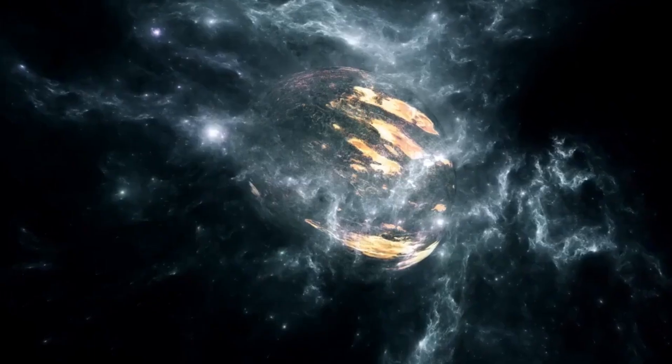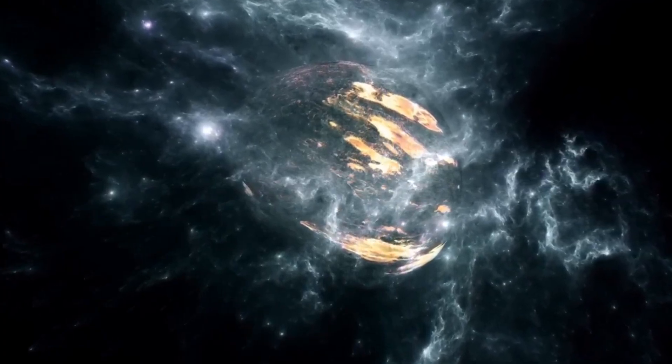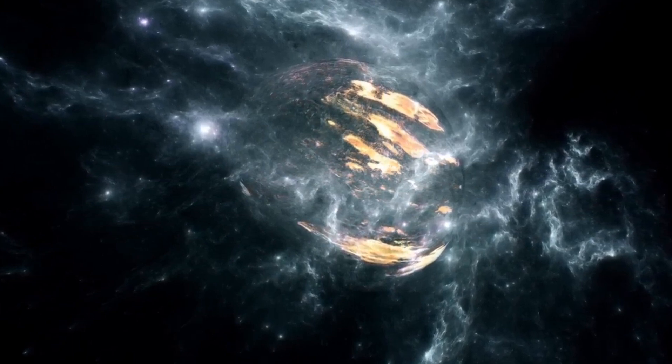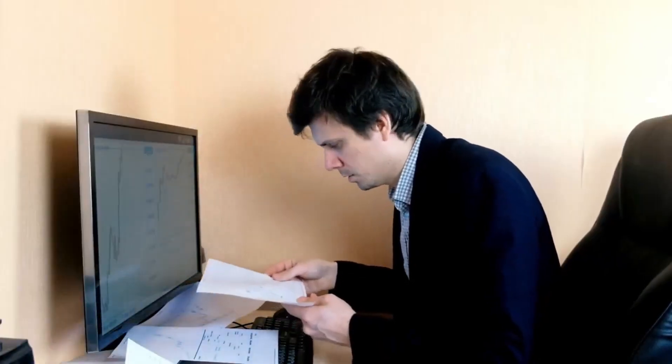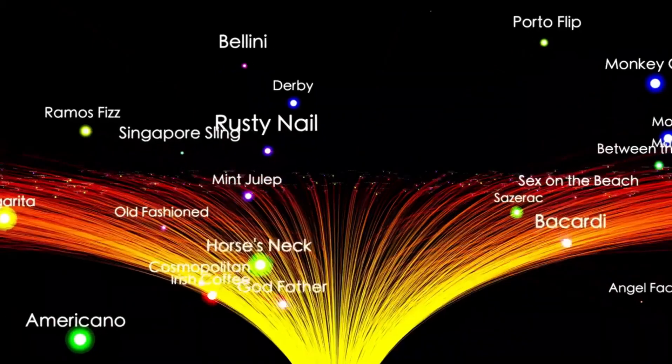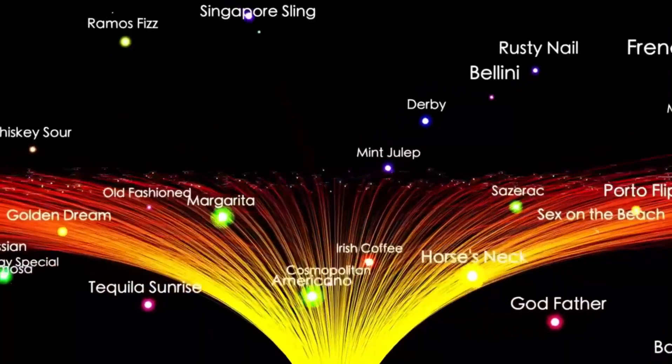This explosion is one of the most energetic events in the universe, releasing an enormous amount of light and radiation that can outshine entire galaxies for a brief period. For Betelgeuse, this fate is inevitable. The star is currently in the late stages of its life, fusing helium into carbon in its core. Once it exhausts its fuel, the core will collapse, and Betelgeuse will explode in a supernova that will be visible from Earth, even during the day. The explosion will be a spectacular sight, casting shadows at night and illuminating the sky with a brilliance that rivals the full moon.